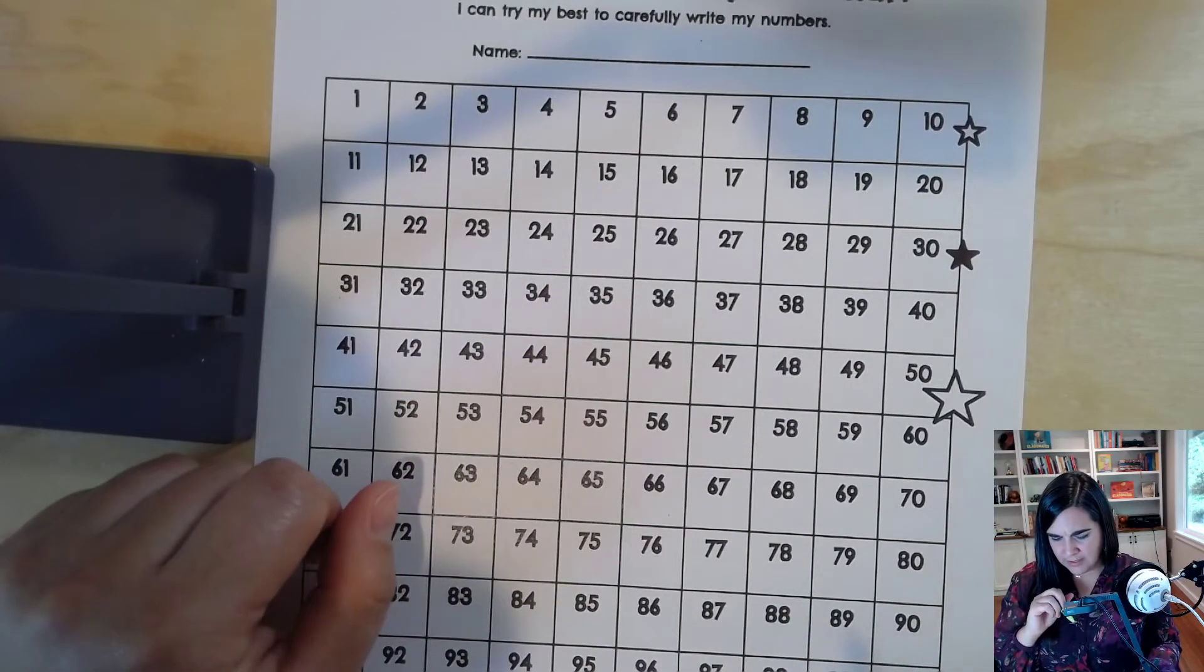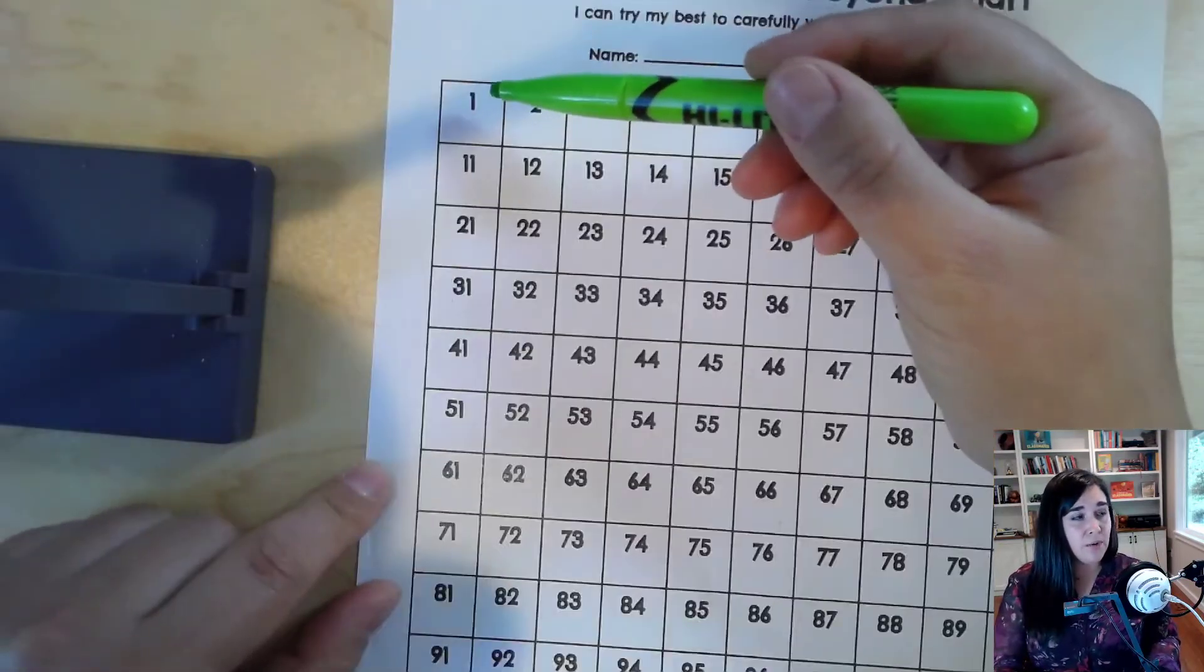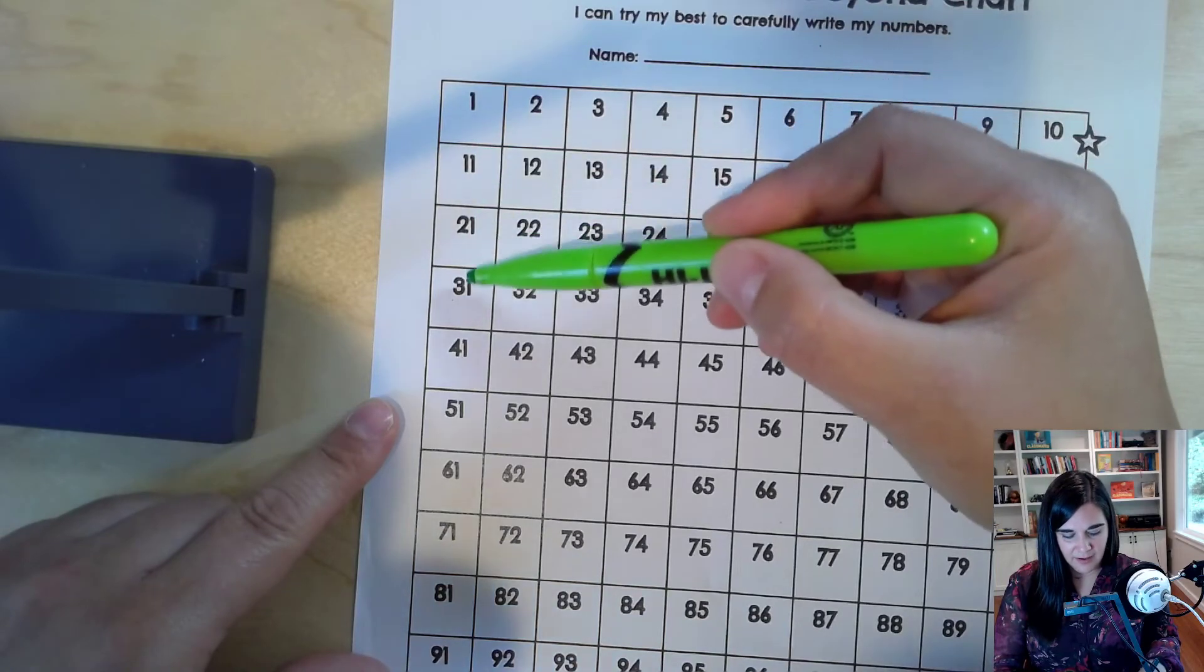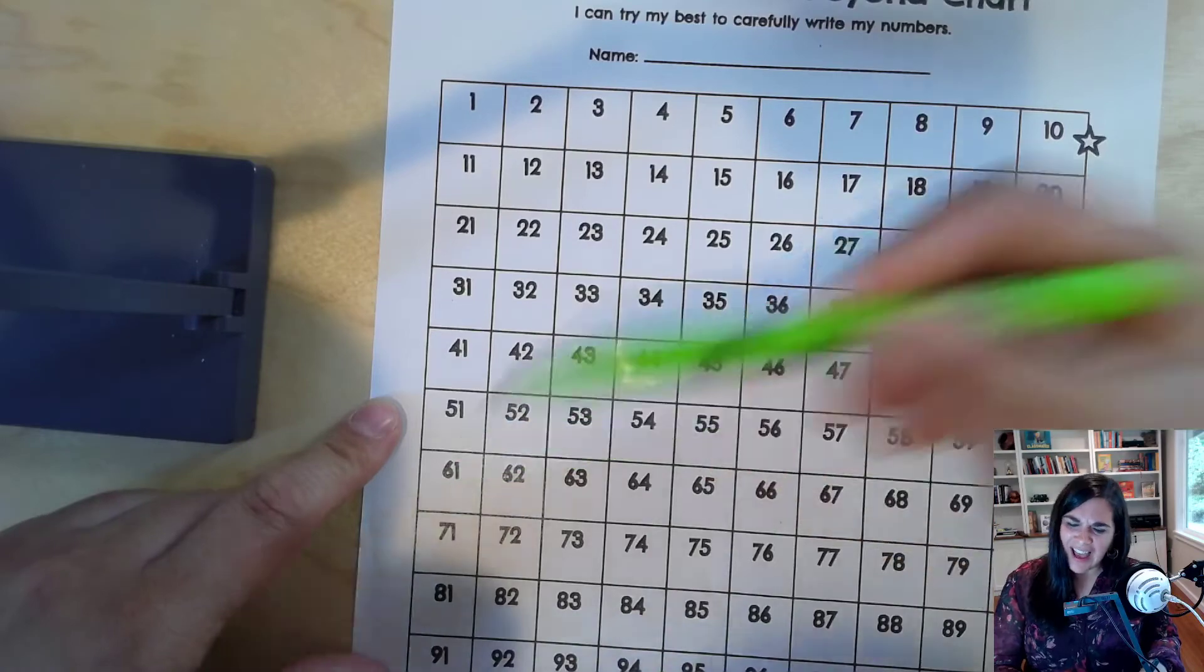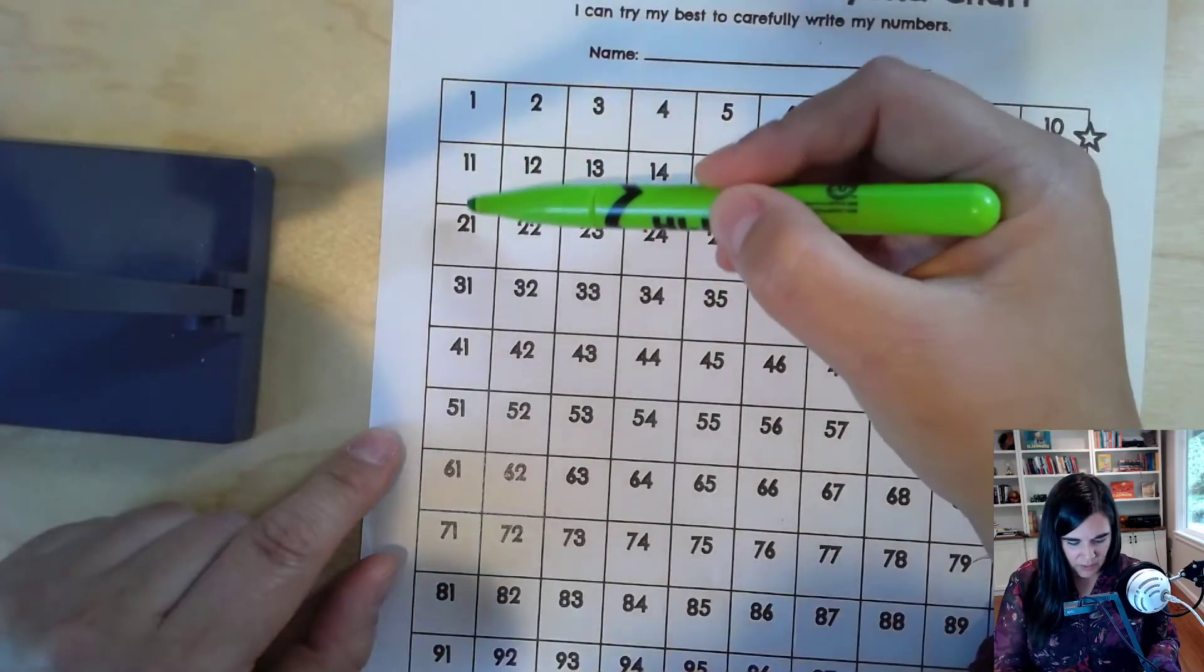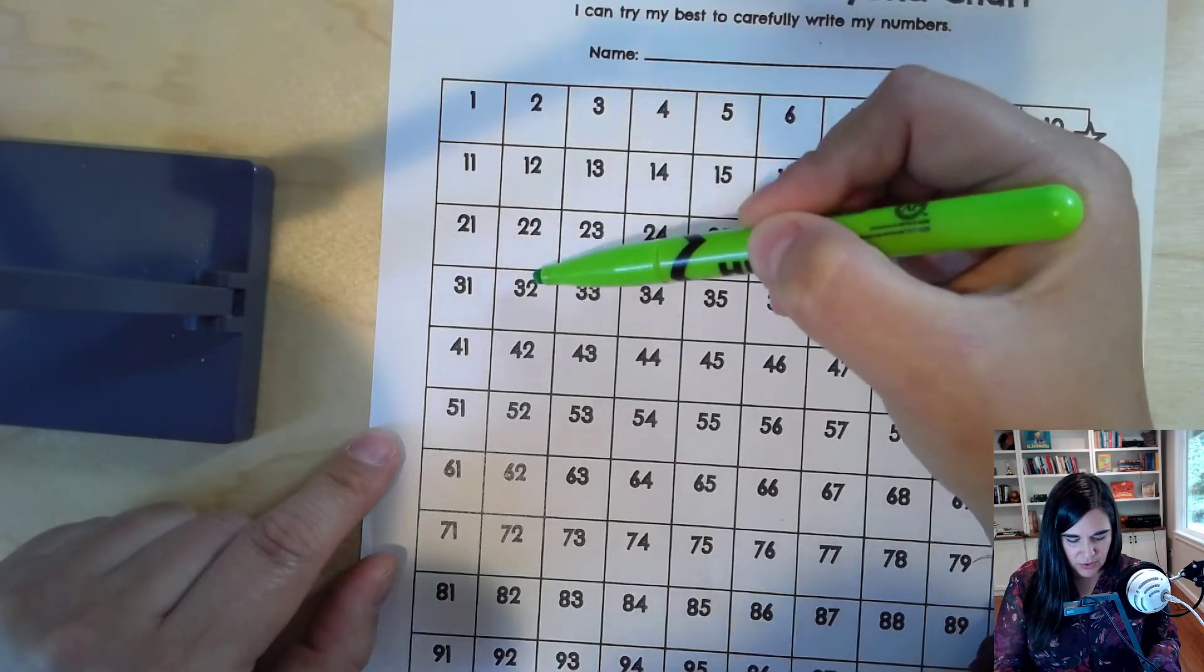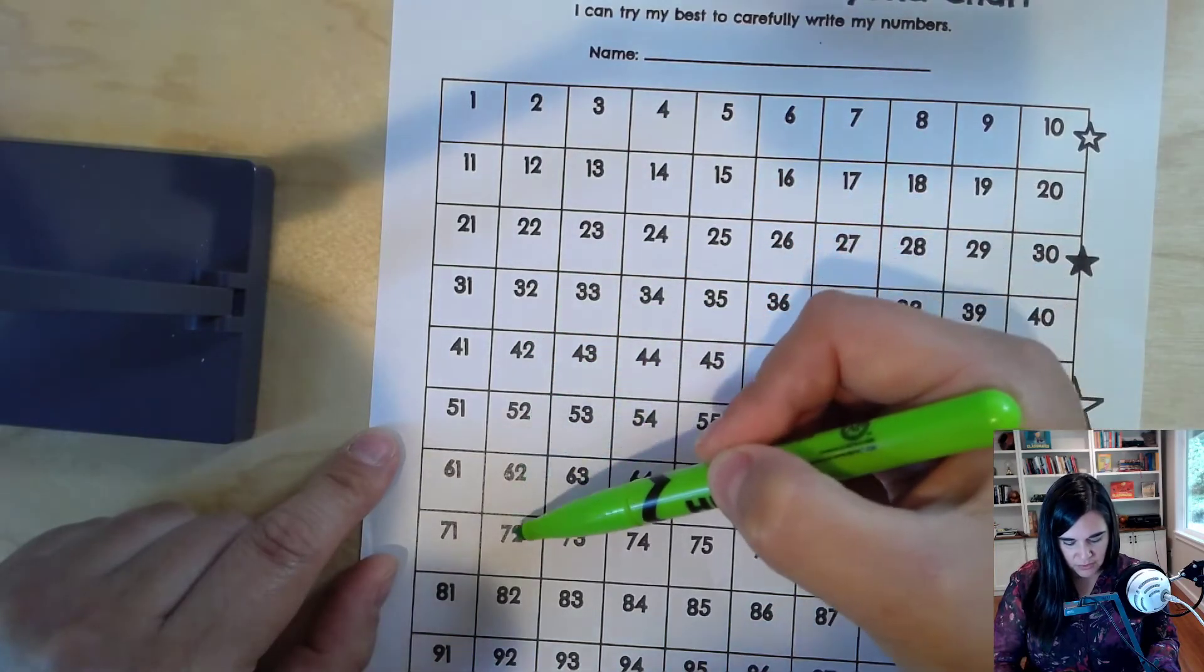Hmm. Do you notice that the numbers in this row or column all have a 1 at the end? I wonder? Do all of the columns do that? Let's check. 1, 1, 1, 1. Yep. 2, 2, 2, 2. Hmm. 2, 2, 2, 2, 2.